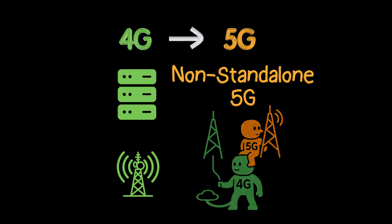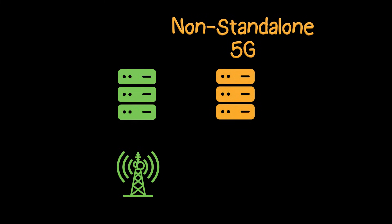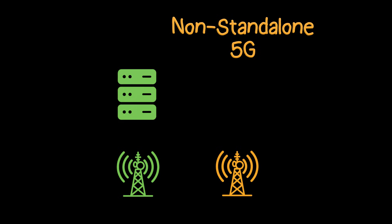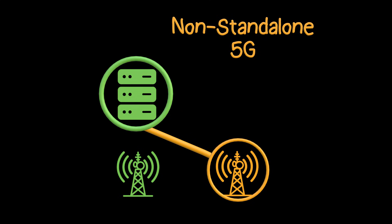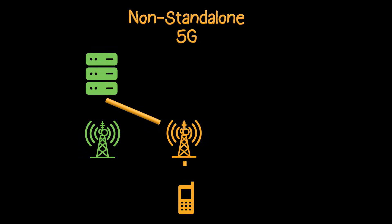So which do we introduce first — 5G core or 5G base station? In practice, operators deployed 5G base stations first and connected them to the 4G core. Why this order? Because the 4G core has higher capacity to support the 5G base station, so adding a 5G base station did not overload it. This lets users get faster data from the 5G base station and higher layer control messages from the 4G base station without waiting for a new 5G core.